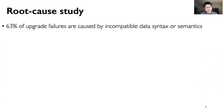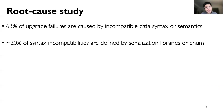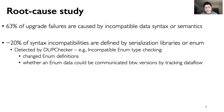As mentioned, in our root cause study, we found that almost two-thirds of upgrade failures are caused by incompatible data syntax or data semantics. In particular, about 20% of syntax incompatibilities involve data syntax defined by serialization libraries or built-in data types. Because these incompatibilities have a clear syntax definition interface, we designed a static checking tool called DUP checker that automatically detects such issues. For example, DUP checker checks incompatible enum types by detecting changed enum definitions between versions and further checking whether an enum value could be communicated between versions by tracking its data flow.